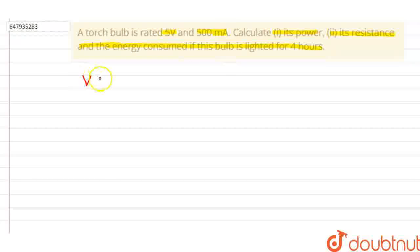Voltage given is 5 volts. Current given is I equals 500 milliampere which is equal to 500 by 1000 ampere which is equal to half ampere.